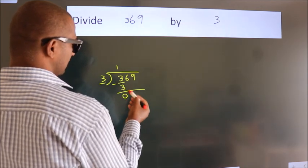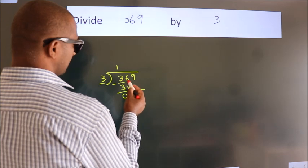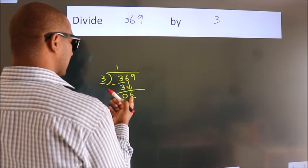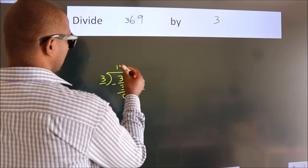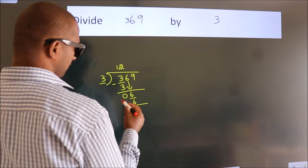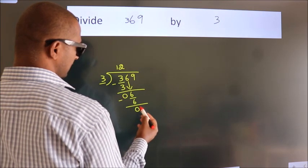After this, bring down the beside number. So 6 down. So 6. When do we get 6? In 3 table: 3 twos, 6. Now we subtract. We get 0.